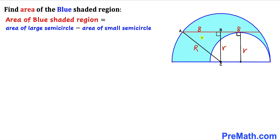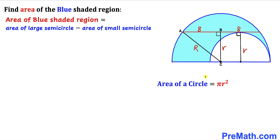The area of this blue shaded region is equal to the area of the larger semicircle minus the area of the smaller semicircle. Recalling the area of a circle formula — area equals π r squared — the area of a semicircle is therefore π r squared divided by 2.